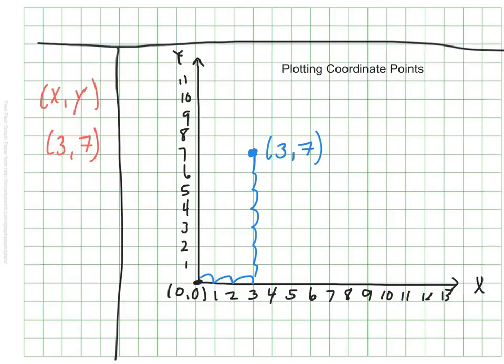So now let's have you try a point. Go ahead and plot the point (11, 4), the coordinate point (11, 4). Take a moment, mark it on your graph. How'd you do? Does yours look like it's in the same spot as mine? Great.